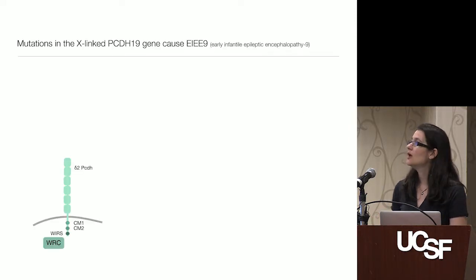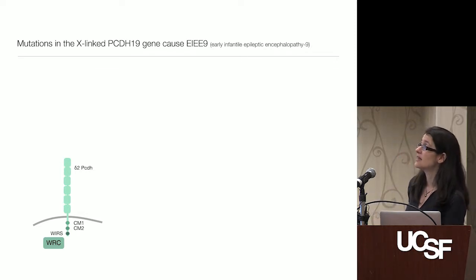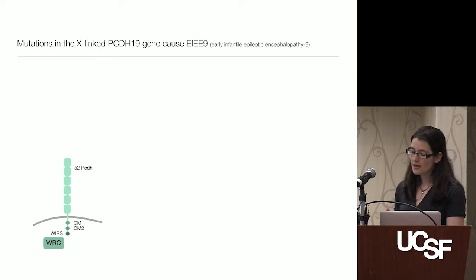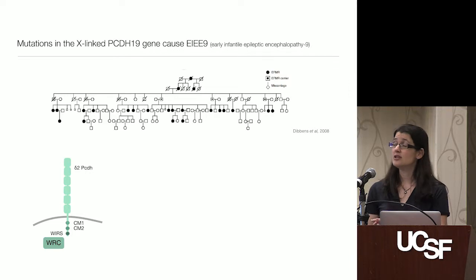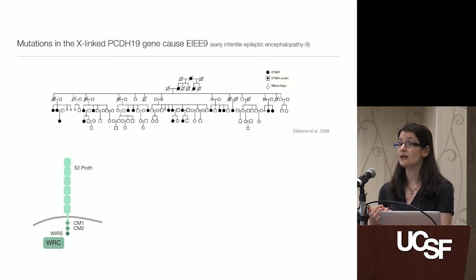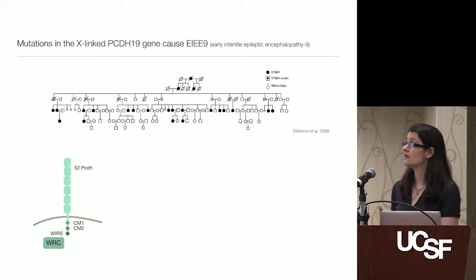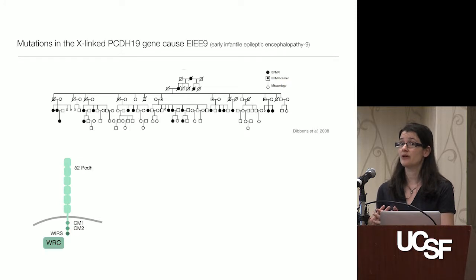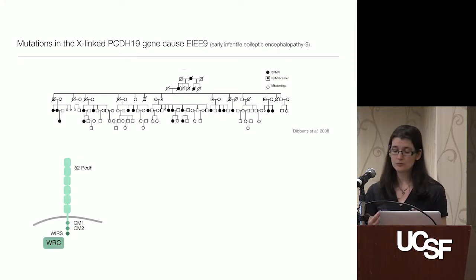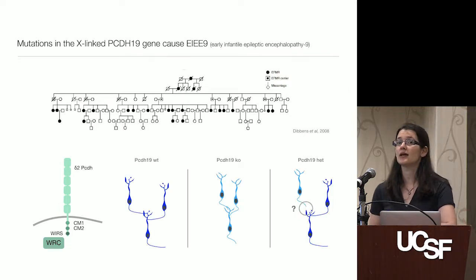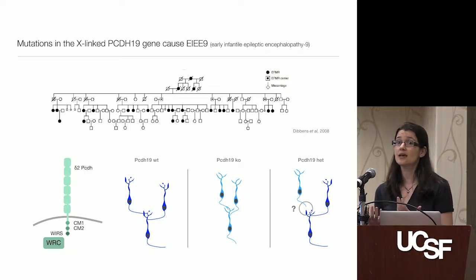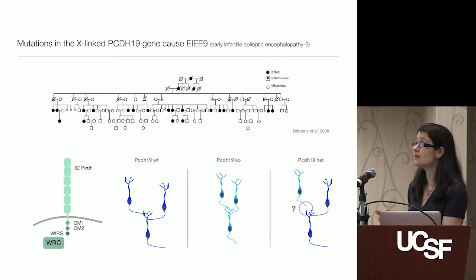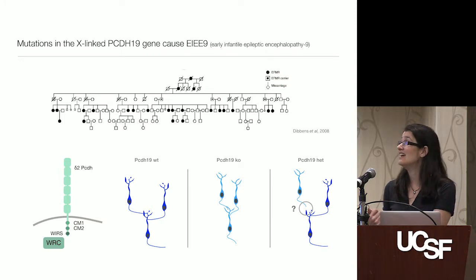As you all probably know, Protocadherin-19 is a cell-cell adhesion protein. It sits at the cell membrane and mediates recognition and adhesion between different cells. Mutations in this X-linked gene manifest with seizures and other neurological symptoms in affected heterozygous females. However, males that have a mutation in this gene are usually spared. Because of this very unusual inheritance mode, it was postulated that this disease might be caused by a phenomenon called cellular interference, where the coexistence of wild-type and mutated cells has a detrimental effect at the tissue level, even if individual cells are themselves not affected. Recent data from our colleagues in Australia have shown very nice evidence that this theory might indeed be correct.